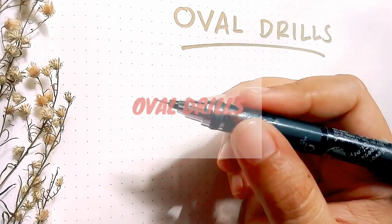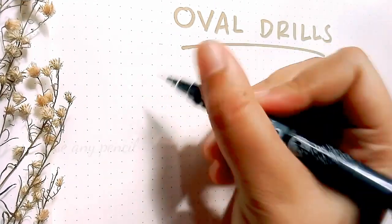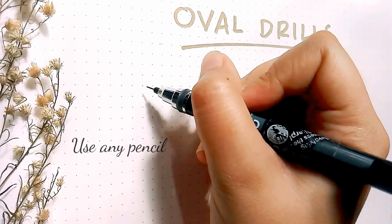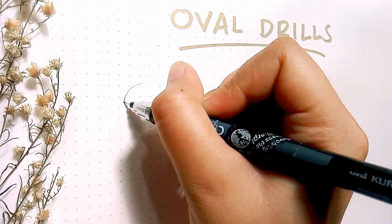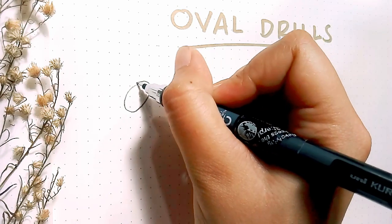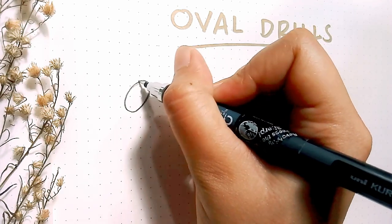Let's start with the first drill, the oval drills. So get a pencil and all you have to do is follow what I do. As you can see, we'll mostly be making circles.